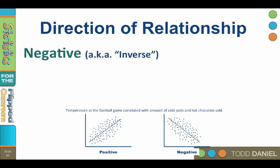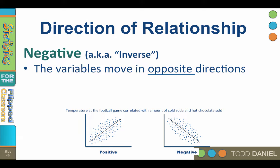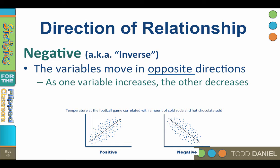In a negative relationship, also called an inverse relationship, the variables move in opposite directions — as one variable increases, the other decreases. For example, as you study more, the fewer silly mistakes you will make. At the concession stand, as temperature decreases, the sales of hot chocolate increase. As temperature increases, as it gets hot, we will sell less hot chocolate.